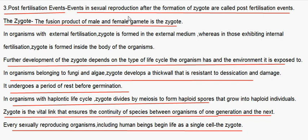Post-fertilization Events: Events in sexual reproduction after the formation of the zygote are called post-fertilization events. The zygote is the fusion product of the male and female gametes. In organisms with external fertilization, the zygote is formed in the external medium; in those with internal fertilization, it forms inside the body. In fungi and algae, the zygote develops a thick wall resistant to desiccation and damage, and undergoes a period of rest before germination. In organisms with a haplontic life cycle, the zygote divides by meiosis to form haploid spores that grow into haploid individuals. The zygote is the vital link ensuring continuity of the species between generations.